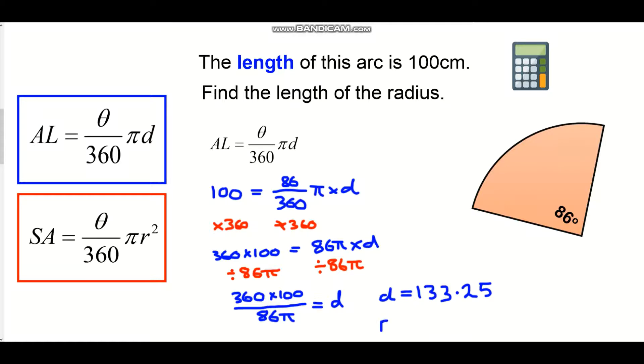So if I want to find the radius from there all I need to do is half that number. So if I divide that by two I get a radius of 66.6 and that is in this case centimeters as well because my arc length is being measured in centimeters. Okay so your method for these questions when you're being asked for a radius or diameter. Put the information you know into the original equation whether it's arc length or sector area. And then rearrange it so that you've got either your diameter or your radius as your subject of your equation.